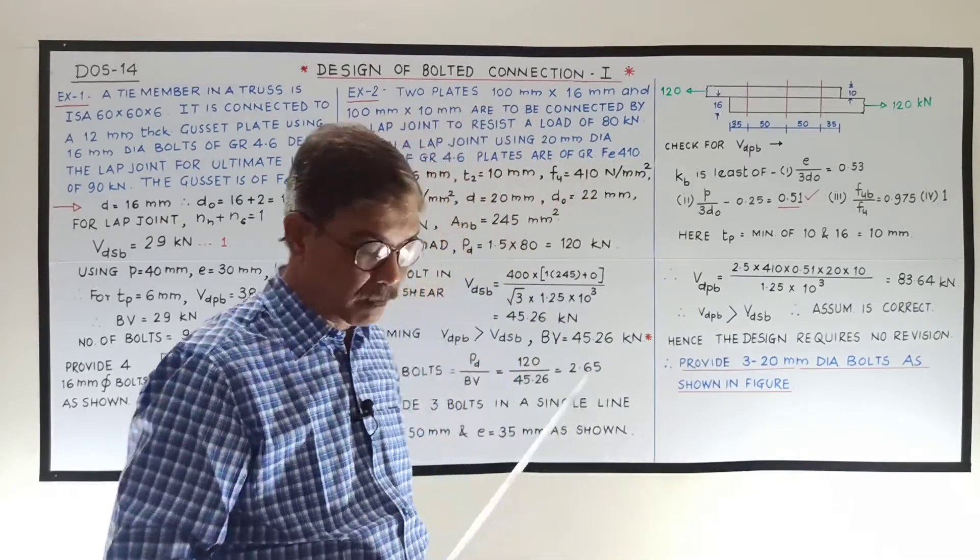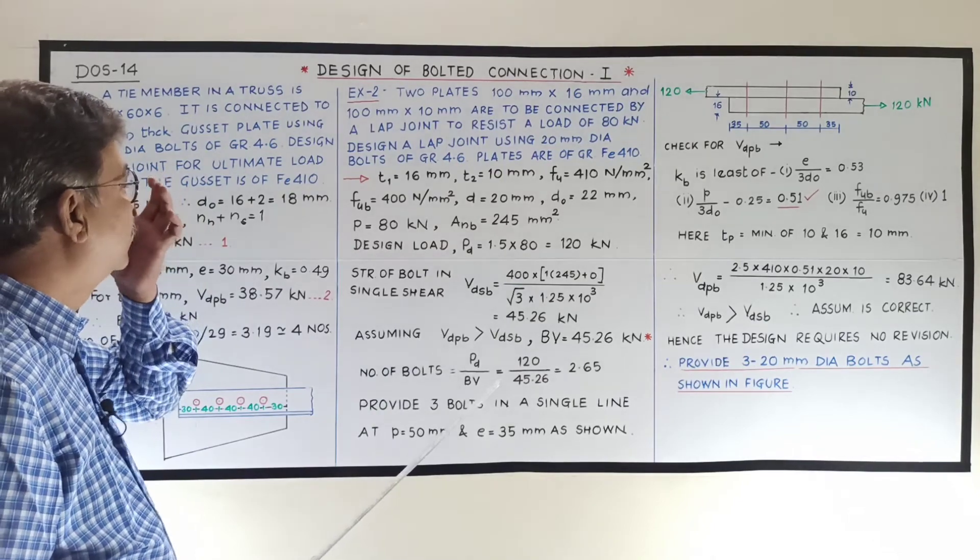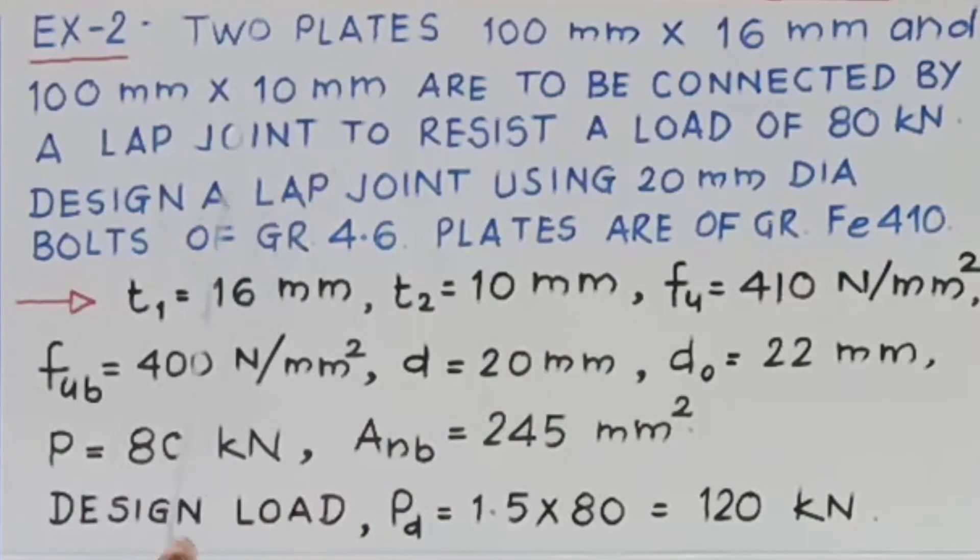Let us take second example. What is given: two plates, 100 mm by 16 mm and 100 mm by 10 mm. They are of different thicknesses, are to be connected by a lap joint to resist a load of 80 kilonewton. Now mind well, here it is not clearly mentioned whether this load is factored load or ultimate load. Design a lap joint using 20 mm diameter bolts of grade 4.6. Plates are of grade Fe 410.